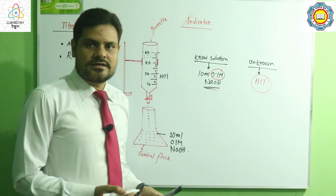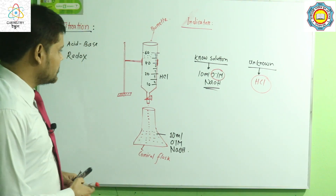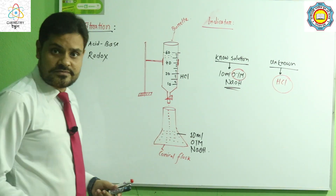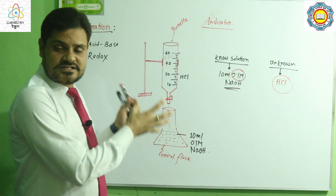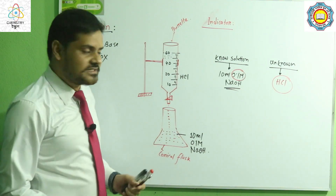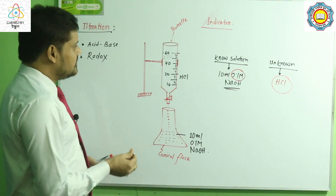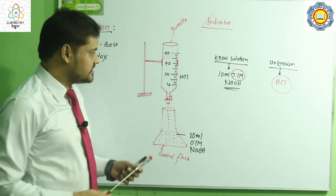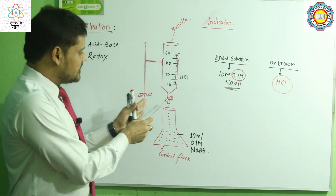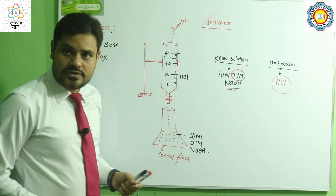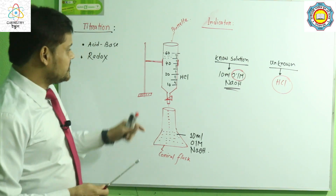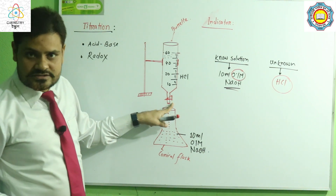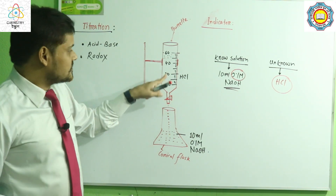Dear learners, have a look at the figure — there is an arrangement of the apparatus. This process is called volumetric analysis. There is a glass apparatus called the burette, and this burette has a screw and a stopcock.